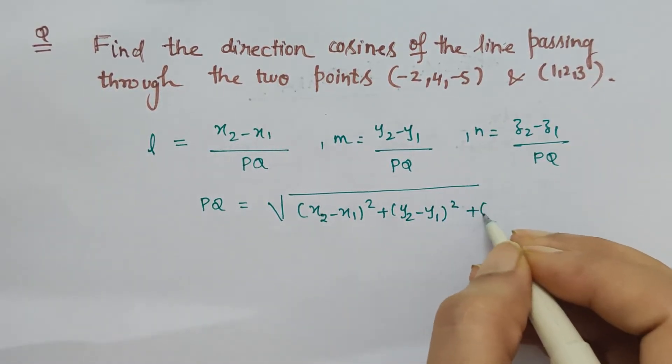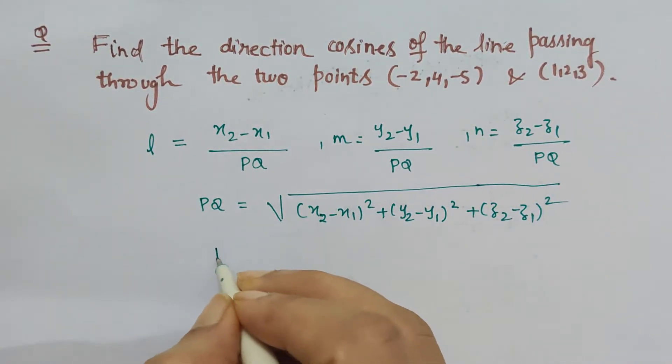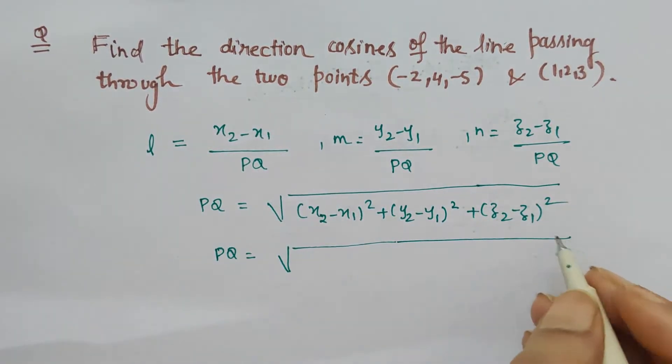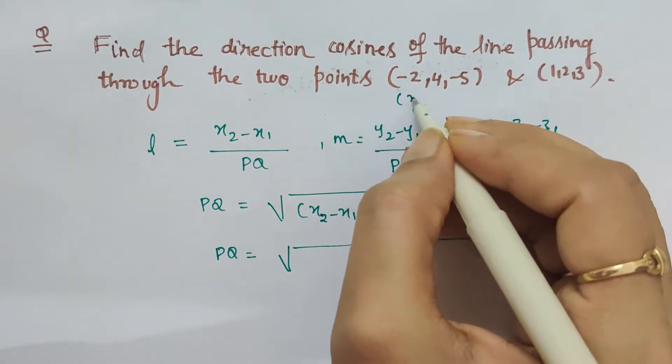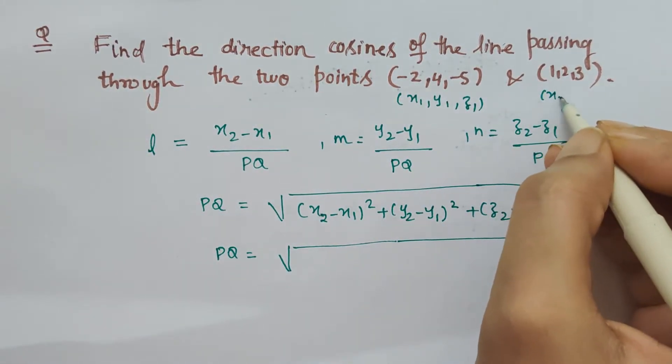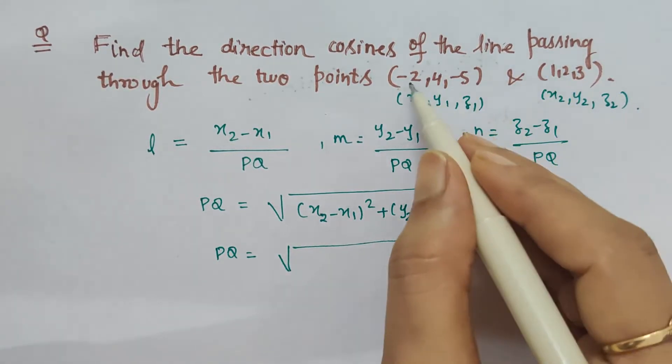So let's first calculate pq itself. From the question this is, let us say, x1 y1 z1 and this is x2 y2 z2. So x2 minus x1 means 1 minus minus 2, which is 1 plus 2, which is 3 square.